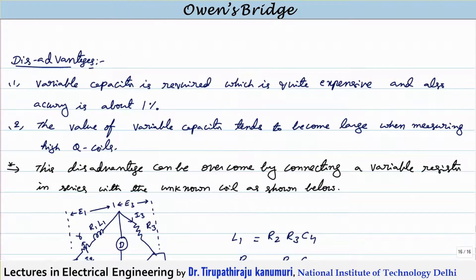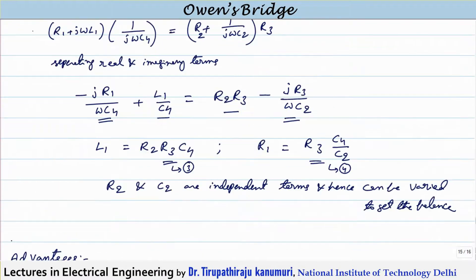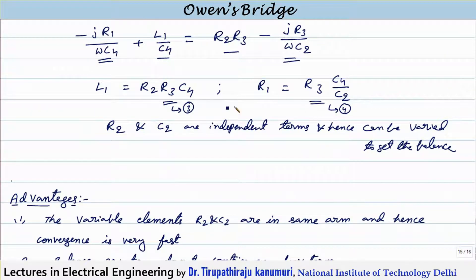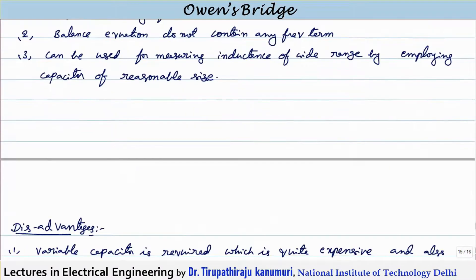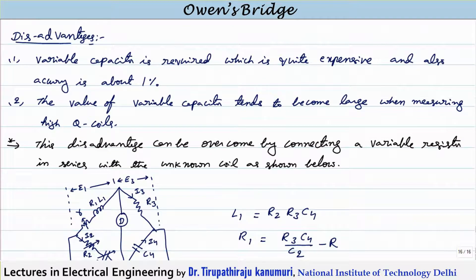The disadvantages: this method needs a variable capacitor which is quite expensive. Second, the variable capacitor has less accuracy — only of the order of 1 percent. Third, the value of the variable capacitor tends to become large when measuring high Q coils. High Q means Q = ωL/R is large, so L is large compared to R, meaning R is small, and the required value of C2 becomes large.